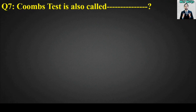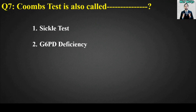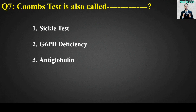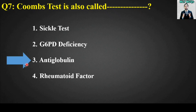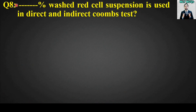MCQ number seven: The Coombs test is also called blank. Options: sickle test, G6PD deficiency, or antiglobulin. The right answer is option number three — antiglobulin. The Coombs test is also called the antiglobulin test.